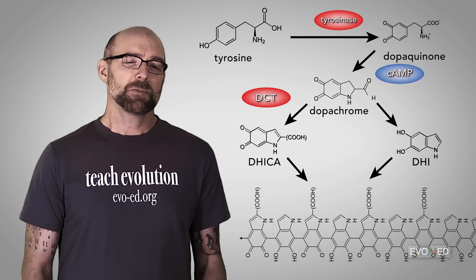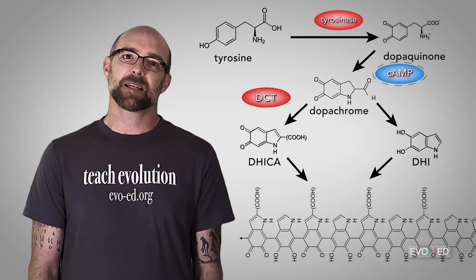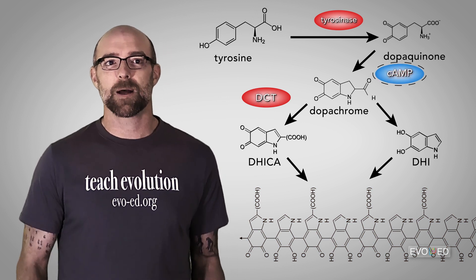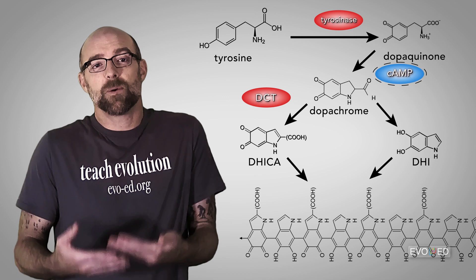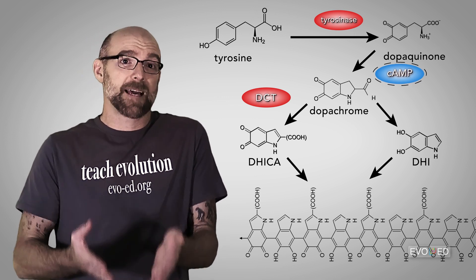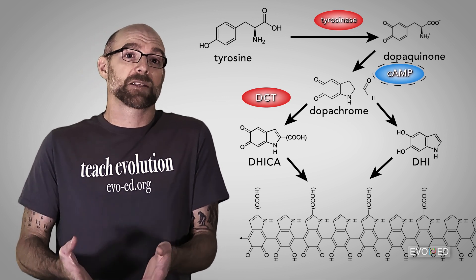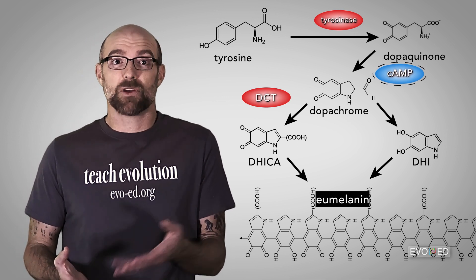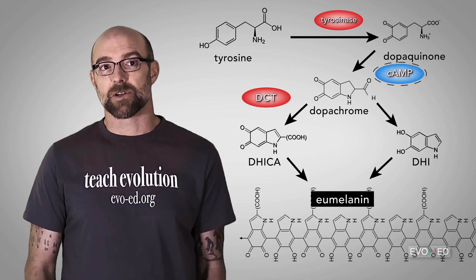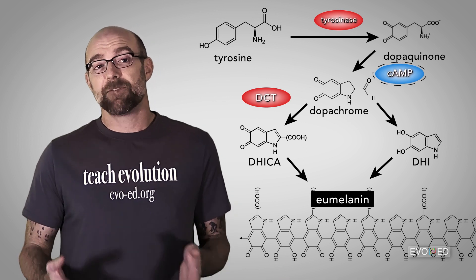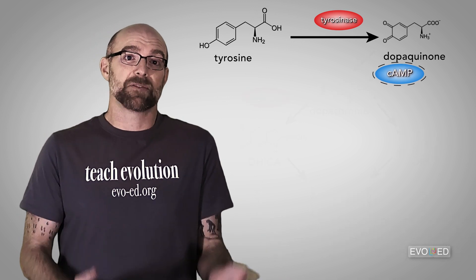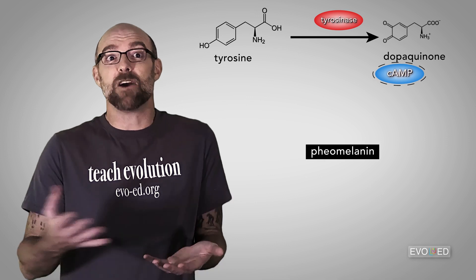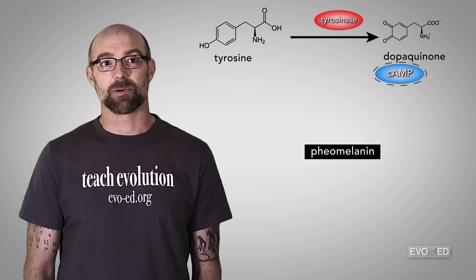When it comes to the molecule cyclic adenosine monophosphate, if the melanocyte has lots of cAMP, then eumelanin would be produced. But if the melanocyte doesn't have a lot of cAMP, then pheomelanin would be produced instead. So what controls cAMP production? Let's take a short detour.